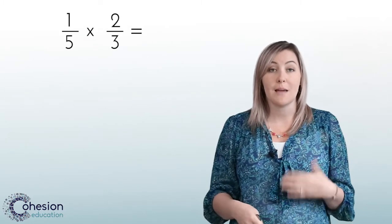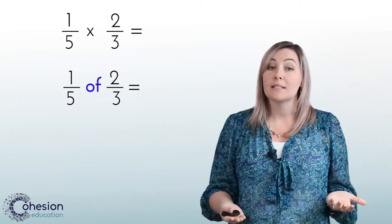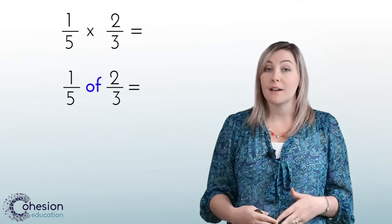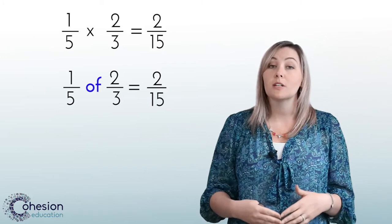For example, when we solve for one-fifth times two-thirds, we are trying to find out how much one-fifth of the fraction two-thirds is, which means when we multiply a fraction by a fraction, our product will be smaller because we are looking for a portion of one of the fractions.